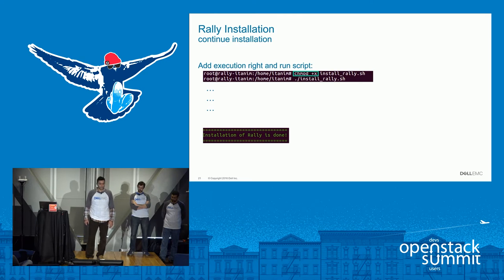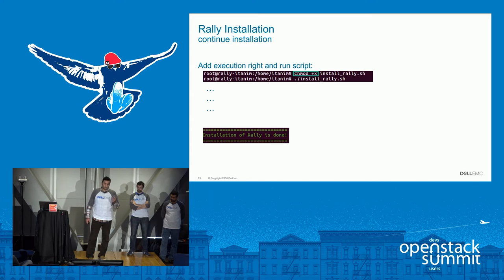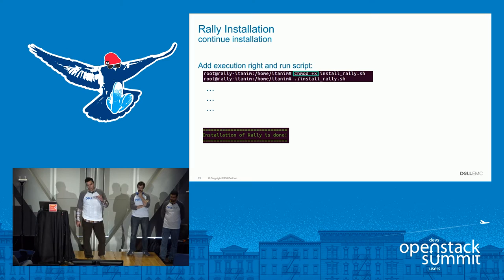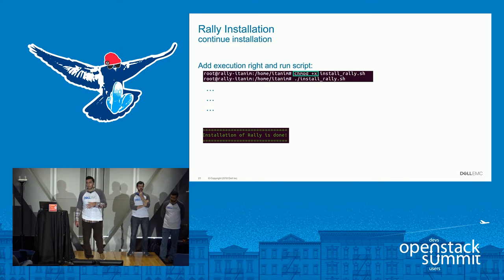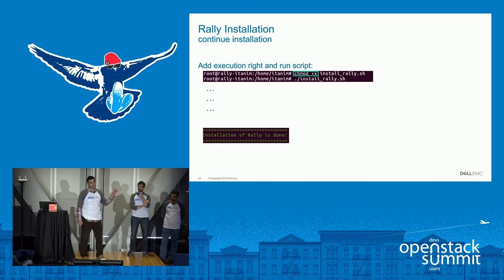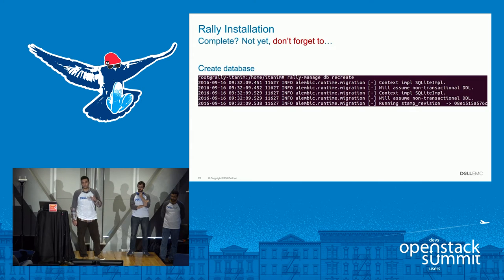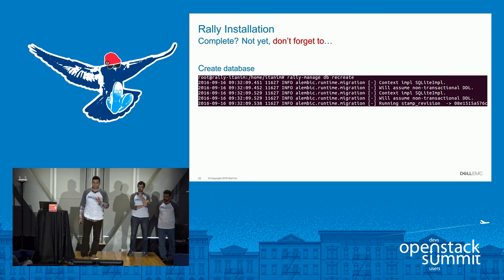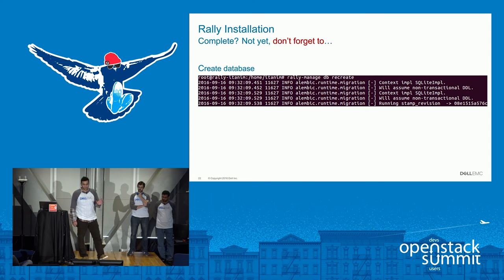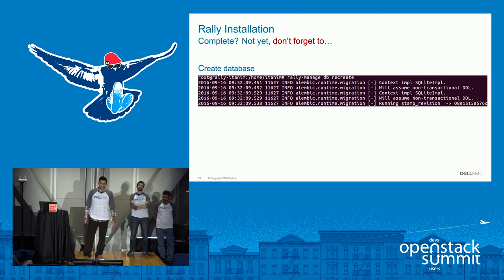Once you have the installer locally on your machine, you add the execution rights to the script and go ahead and install it. You wait for it to download the packages and install Rally. At the end you should see the 'Installation of Rally is done' banner in green. But wait — it's not complete yet. We still have to actually create the database, so we do 'rally manage db create' so that we have somewhere to save our data.